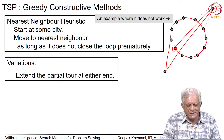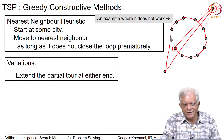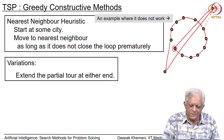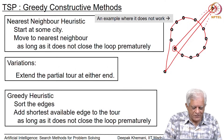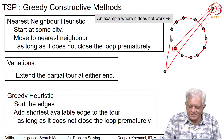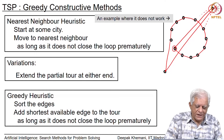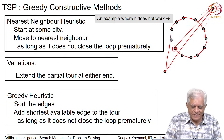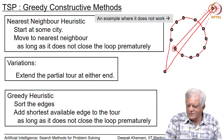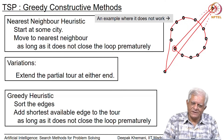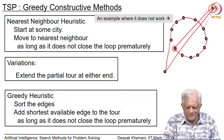A variation would be to extend the tour at either end rather than only one direction — it is possible that might give you a better solution. Another very popular algorithm is called the greedy heuristic, which is reasonably close to Kruskal's algorithm. It says: sort the edges and add the shortest available edge to the tour as long as it does not close the loop prematurely. You want tours to have short edges, so take the shortest edges first and keep adding them.